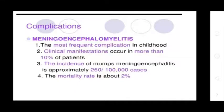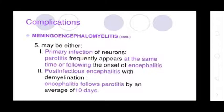Complications of Mumps — Meningoencephalomyelitis: This is the most frequent complication of childhood, occurring in more than 10% of patients. The incidence of mumps meningoencephalomyelitis is reported at 1 per 100,000 cases, with a mortality rate of about 2%.